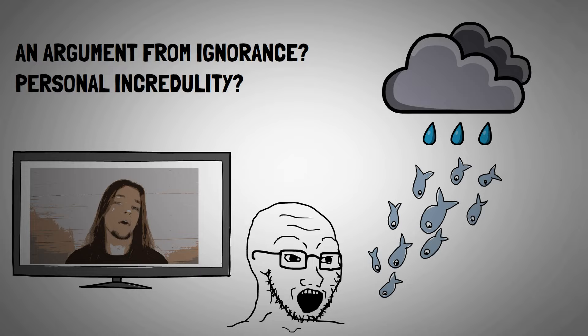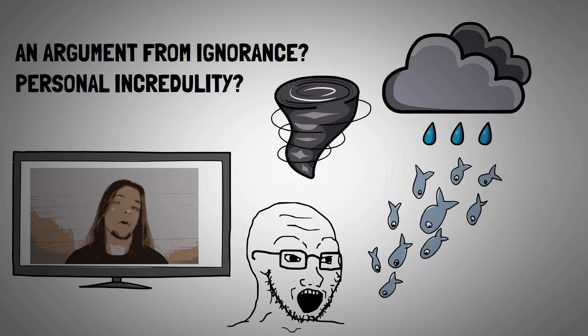Anyhow, as it turns out, we now actually do have an adequate explanation, which, by the way, perfectly demonstrates why arguments from ignorance are flawed. This explanation is, quite simply, a tornado that's formed over a body of water, otherwise known as a waterspout, that's then hurled water and aquatic animals over land. It's a bizarre phenomenon, incredible even, but it's not a miracle, because it doesn't violate the laws of nature.